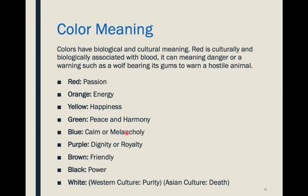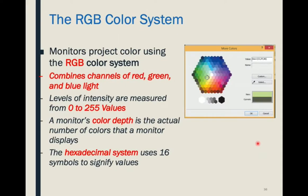Purple represents dignity or royalty — predominantly a cultural one from Europe, where in medieval times purple was hard to come by, so only wealthy and royal people wore it. Brown is friendly, black is powerful. White has a great cultural difference: in Western cultures it can signify purity, while in Asian cultures it signifies death — a very important cultural difference. On the web we use the RGB color system: red, green, and blue with 256 values each. Multiply 255 × 255 × 255 and you get 16 million colors. That's where the hexadecimal system works, giving us a color code signified by the hashtag.